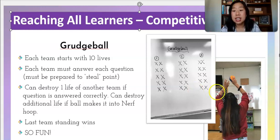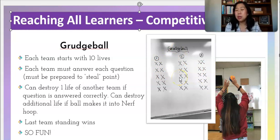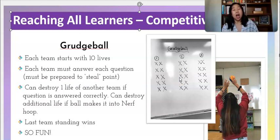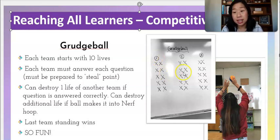Here is an image of my classroom board. I have split my class into teams of three. You can do teams of three, four, or five — I probably wouldn't do more than five because that's just a lot to manage. All of these X's represent lives. Team one has 10 lives, team two has 10 lives, team three has 10 lives.